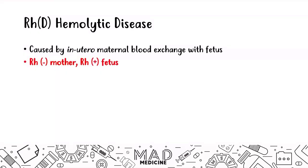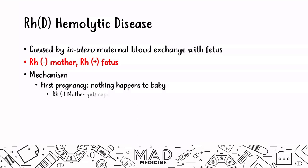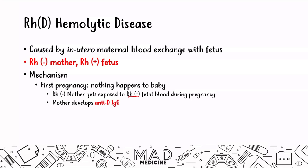The only presentation you'll see is an RH negative mother — a mother who does not have the RH transmembrane protein on her red blood cells — with an RH positive fetus who does have that protein. In the first pregnancy, nothing is going to happen to the baby. The RH negative mother gets exposed to the RH positive fetal blood via blood mixing during the pregnancy, and this exposure leads to the development of anti-D IgG antibodies — antibodies against the RH positive factor.